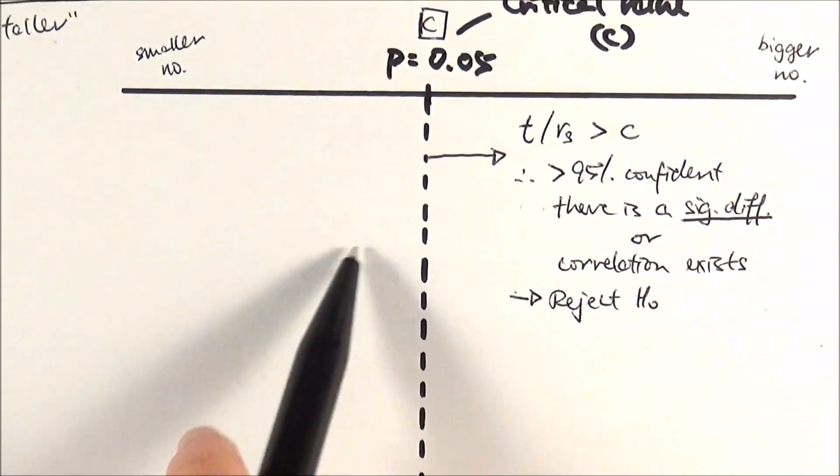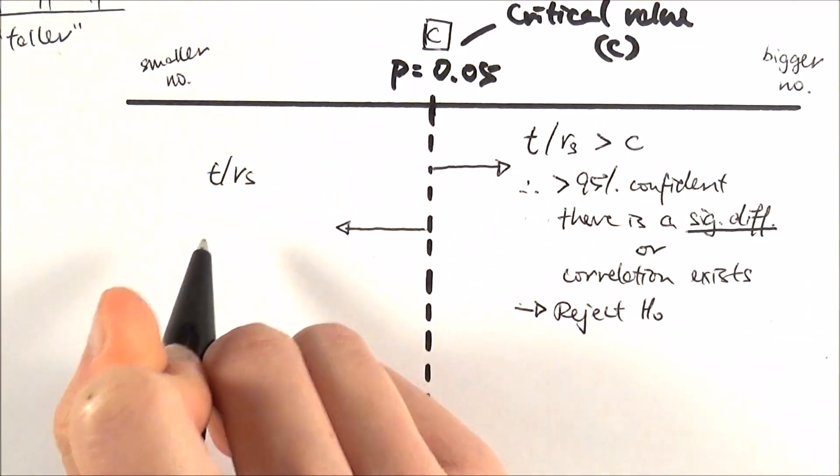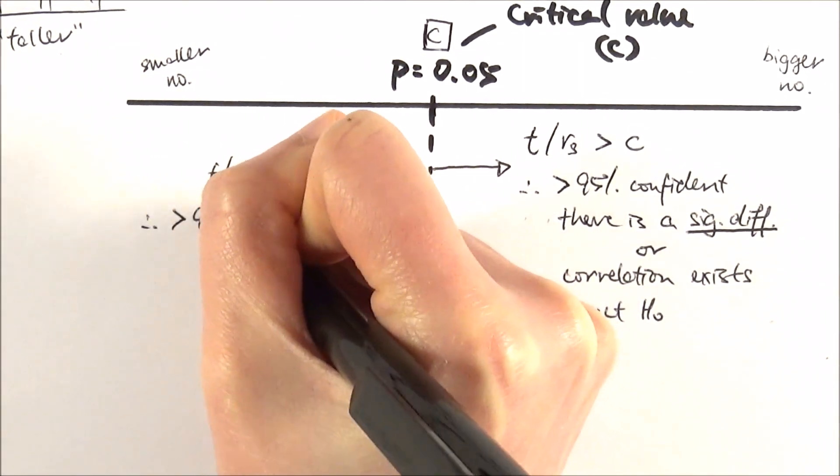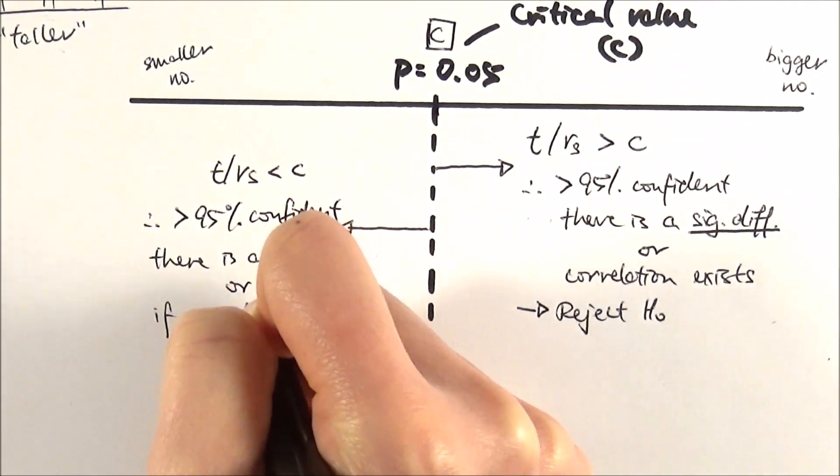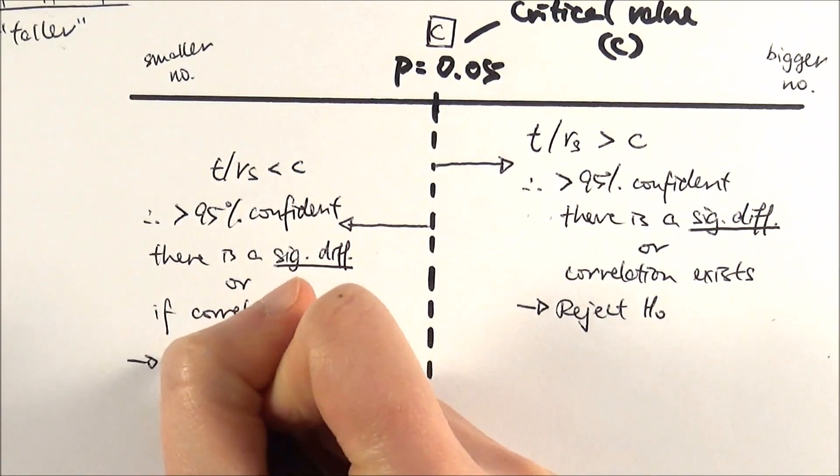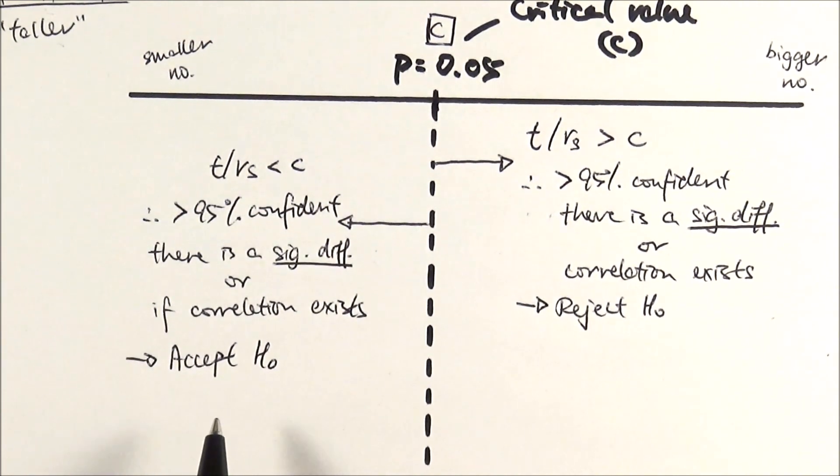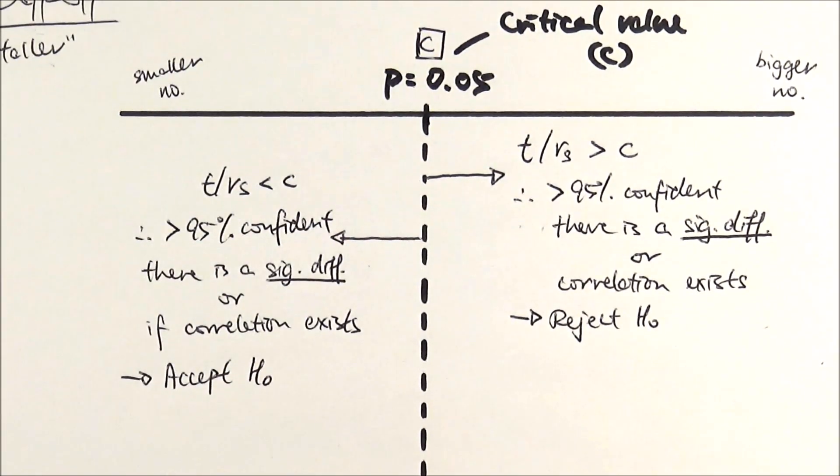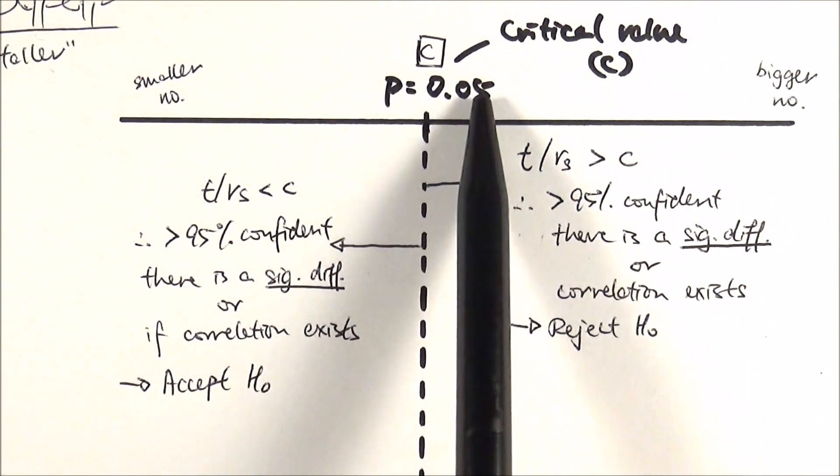On the other hand, if your value is smaller than the critical value, so it's lying on this side, the way I would structure it is my t value or rs value is smaller than my critical value, therefore we are less than 95 percent confident there is a significant difference or correlation exists. What we're saying is, oh actually I'm not entirely sure, I'm not that confident. So what we then do is we accept the null hypothesis. That means that actually what we see is by chance, it's completely random. It just so happens it was the case, the difference that we saw was actually pure luck.